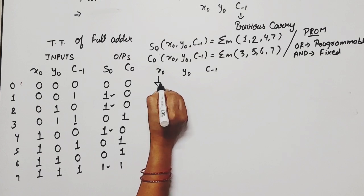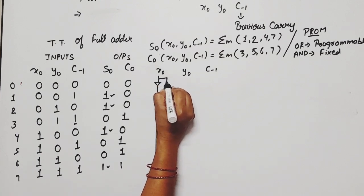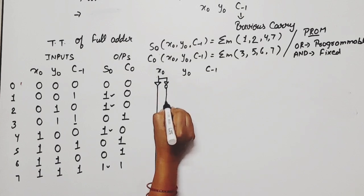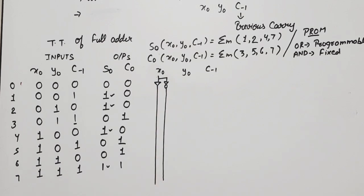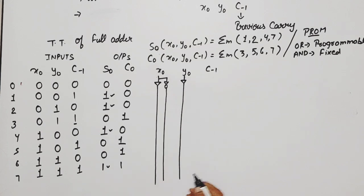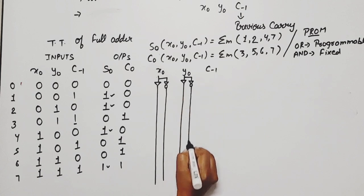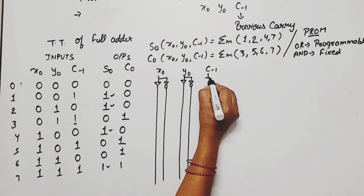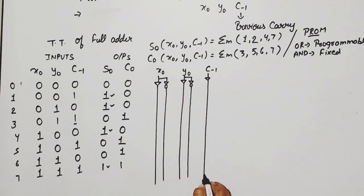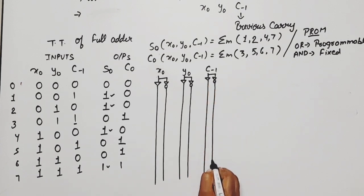If we applied it directly from buffer, then this line for x0. If we applied it from a NOT gate through, inverter through, then this behaves like x0 bar. Same way, buffer through applied, then same will get means y0. Through NOT gate applied, then y0 bar. Here through buffer applied, then same means c-1. Through NOT gate applied, then complement of this.